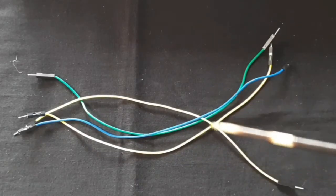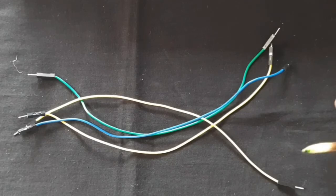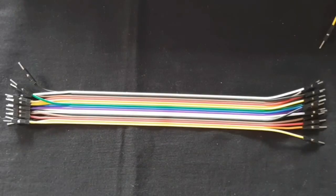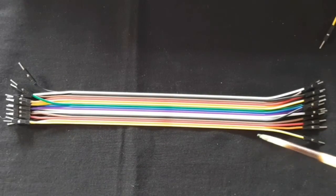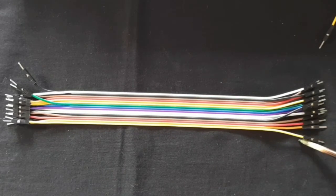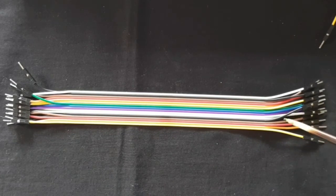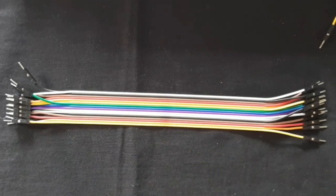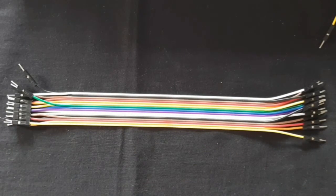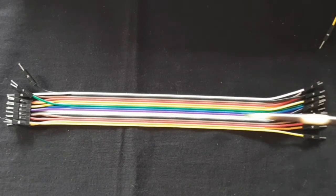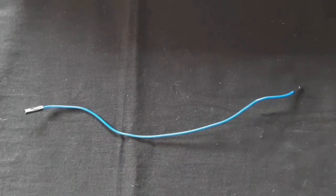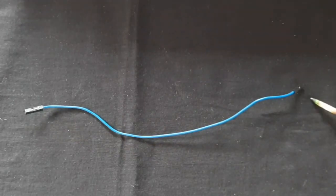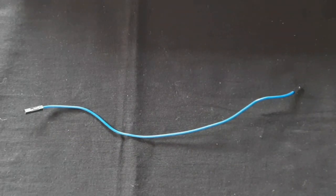These are the jumper wires that I'm going to use for the breadboard connection. These wires are very useful for breadboard and are not much costly also, available online. This end is known as the male end and this is also a male end, so this is a male-male jumper wire. This is a female-female jumper wire. Similarly male-female jumper wires are also available.